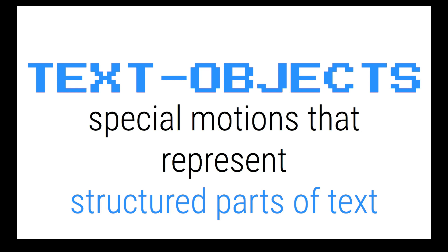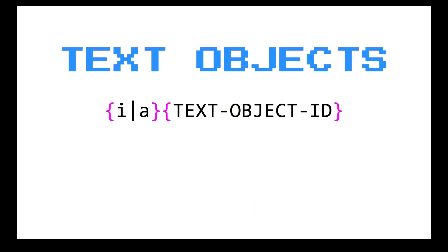Now we're going to talk about text objects. We have something called text objects in Vim that is super helpful for operating on text. They are special motions that represent structured parts of text or code — for instance, a word, a sentence, a paragraph, a block of code, quoted text, and more.